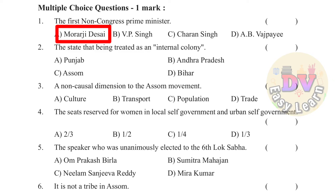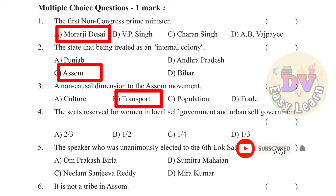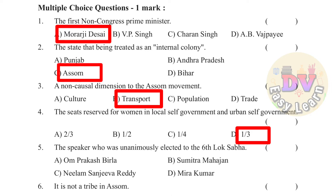Question 1: The first non-Congress Prime Minister was. Question 2: The state being treated as an internal colony — Answer: Assam. Question 3: A non-causal dimension to the Assam movement — Answer: Transport. Question 4: The seats reserved for women in local self-government and urban self-government. Question 5: Who was unanimously elected to the 6th Lok Sabha? — Answer: Neelam Sanjeev Reddy.